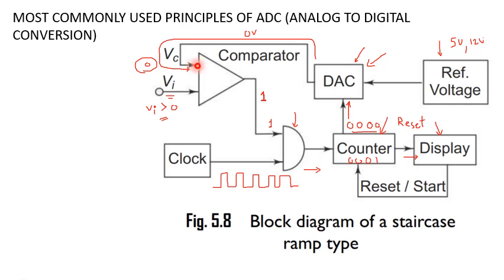The DAC converts zero-zero-zero-one into an analog value, which is fed to the comparator. The comparator checks whether the analog value corresponding to zero-zero-zero-one is less than or greater than Vi. If the analog value becomes greater than Vi, the comparator output becomes zero, turning off the AND gate so clock pulses can no longer pass to the counter. For example, let's say the input voltage is one volt.